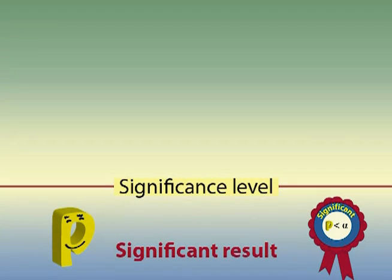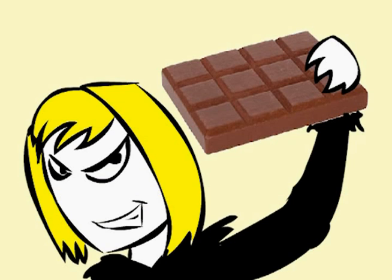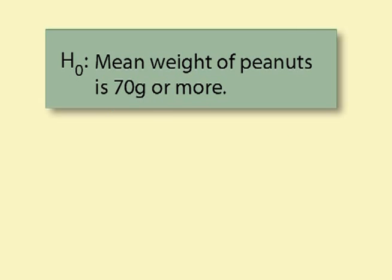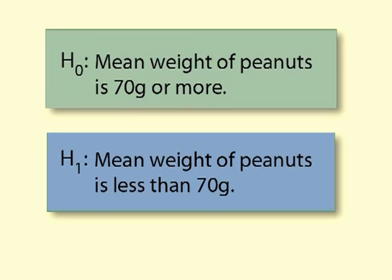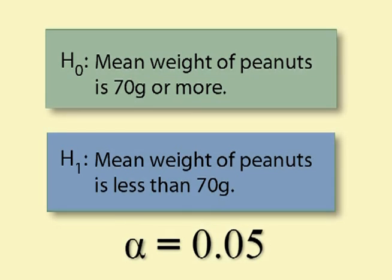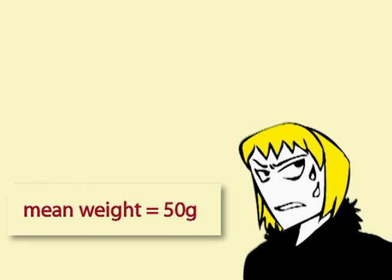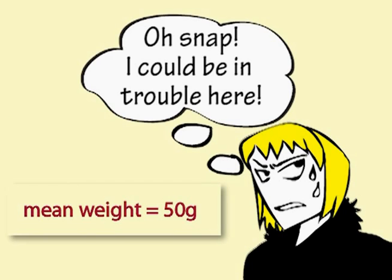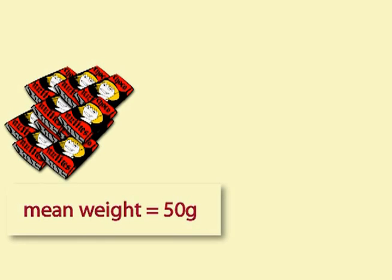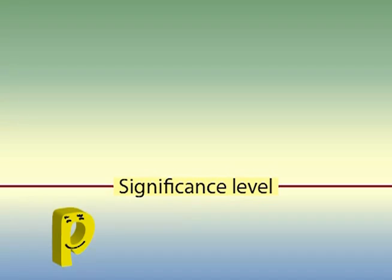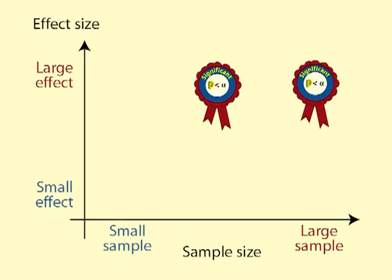A large effect will usually be significant. For example, the null hypothesis is that the mean weight of peanuts in a 200g Chokinati bar is 70g or more; the alternative hypothesis is that the mean weight is less than 70g. We decide on an alpha value of 0.05. We take a sample and the mean weight is 50g — a big effect. Even with a small sample of 10 bars, we are unlikely to get this result if the null hypothesis is true. The p-value will be small and the result will be significant pretty much no matter what size the sample is.